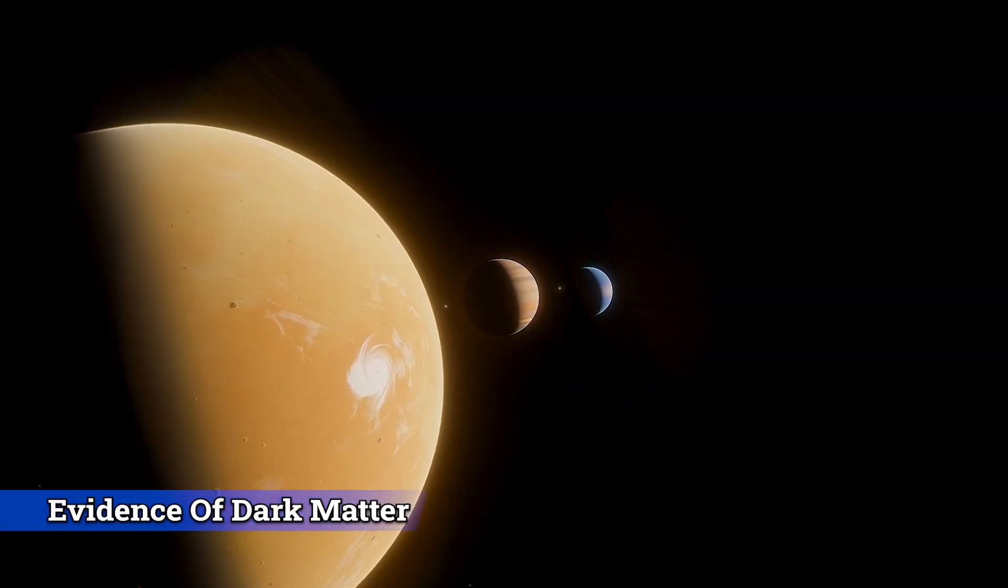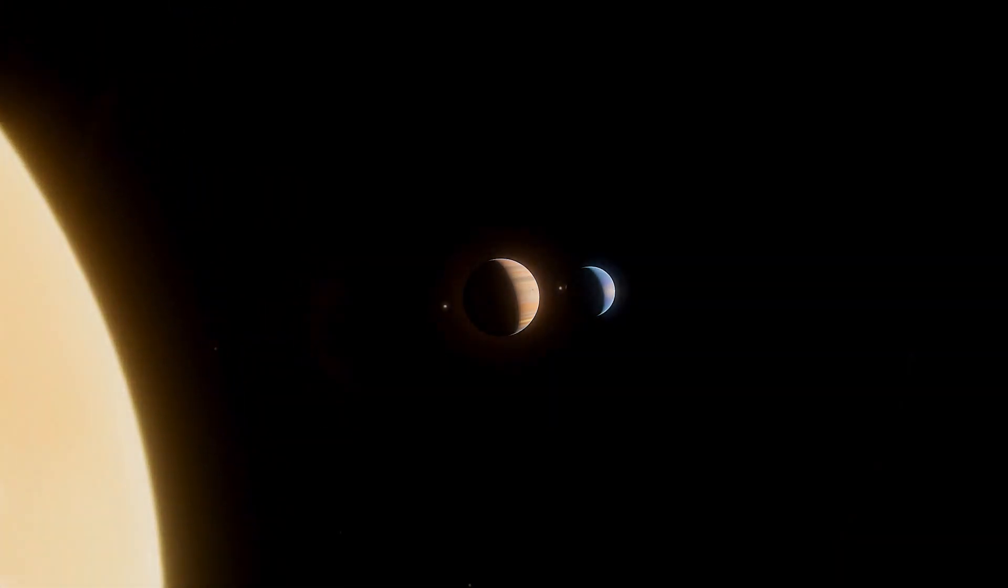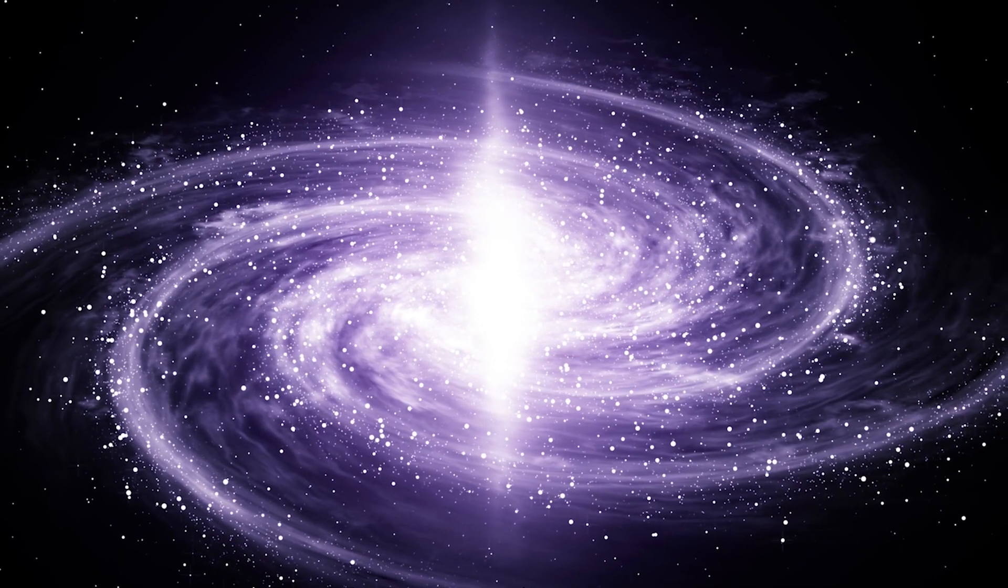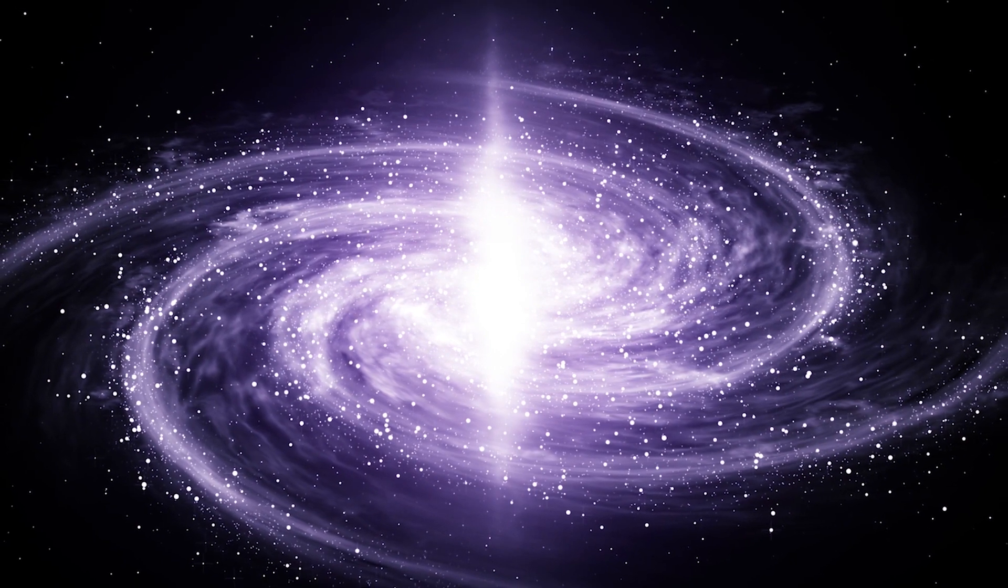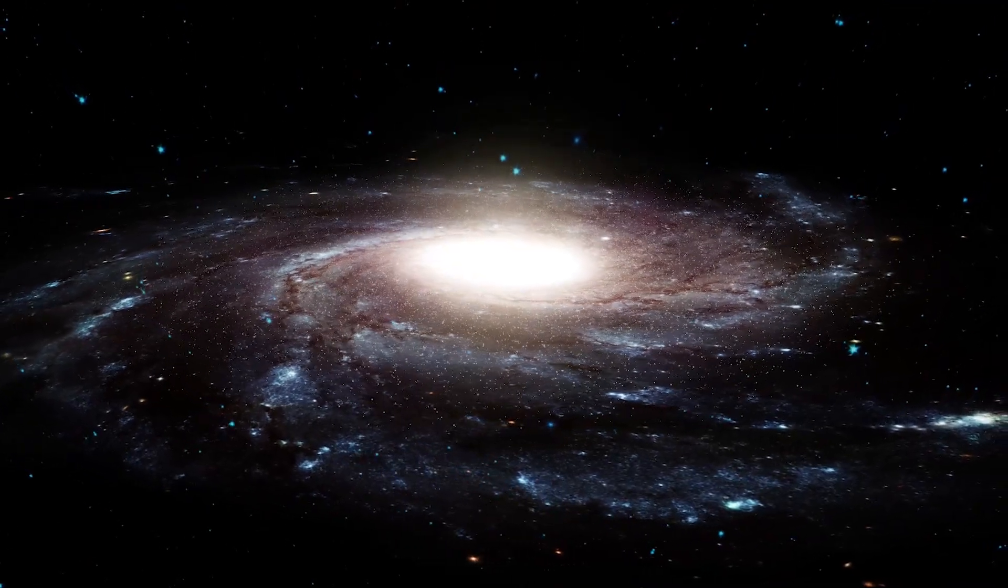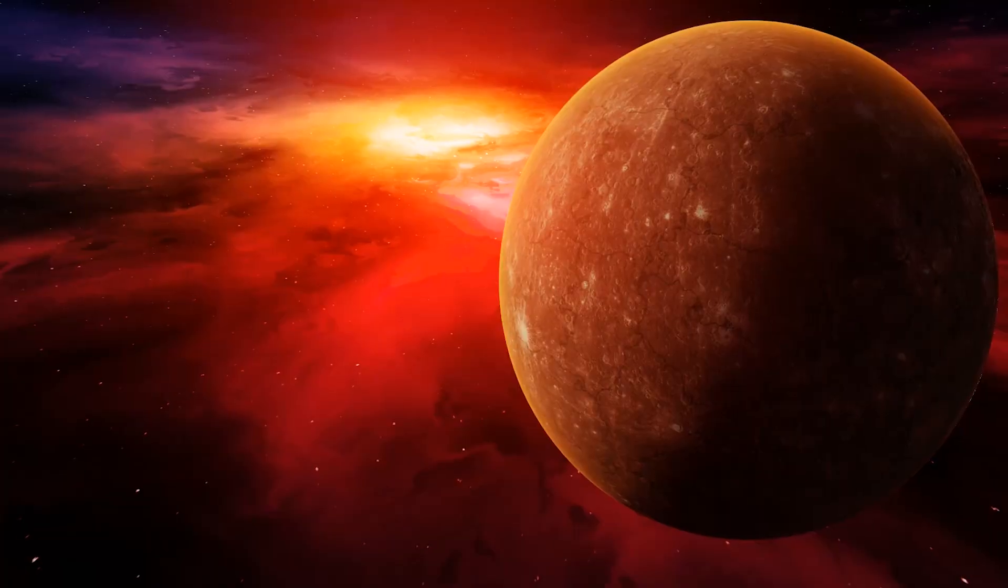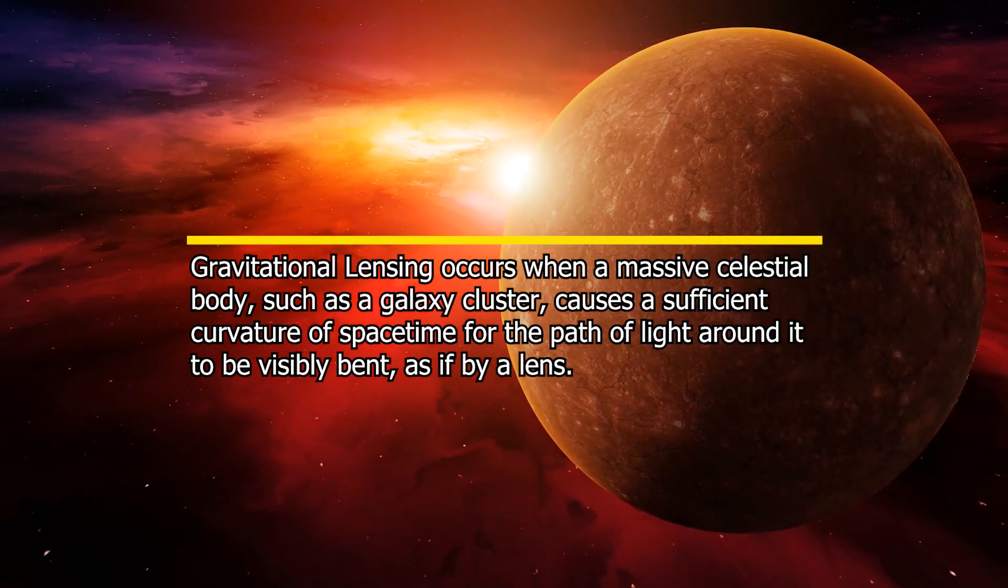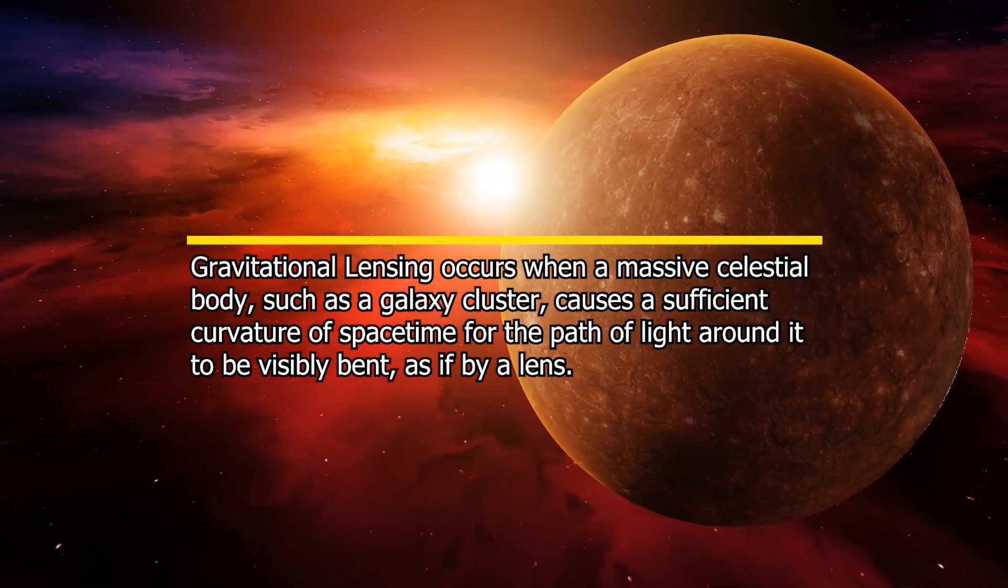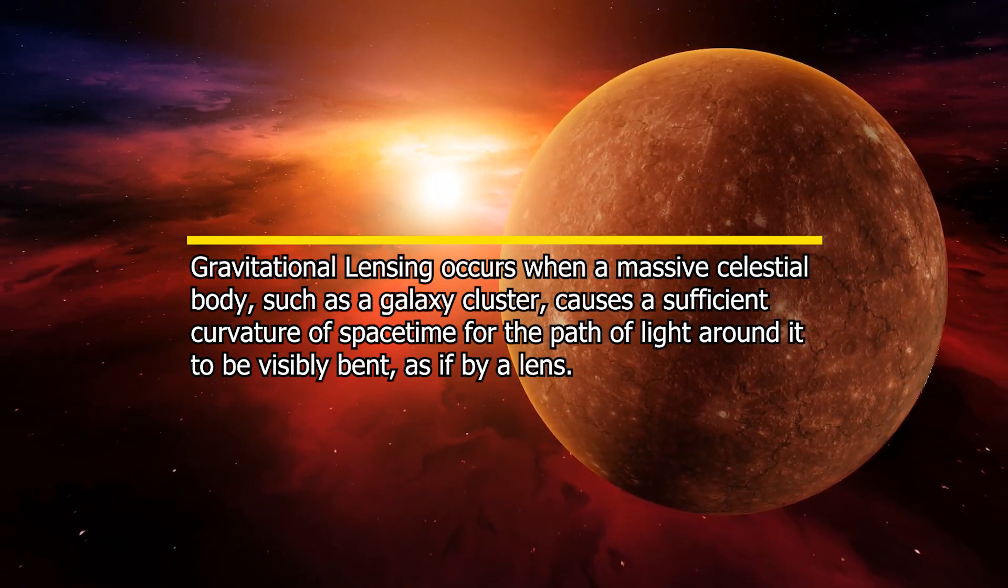Observations of the gravitational effects of dark matter on visible matter provide the bulk of the evidence for its existence. The expected motion of stars and galaxies and the observed motion have been found to differ. For instance, based solely on the observable stuff, galaxies rotate considerably more quickly than they should. In addition, the gravitational lensing effect, which occurs when light is bent by large objects, suggests the existence of extra matter that cannot be seen directly.